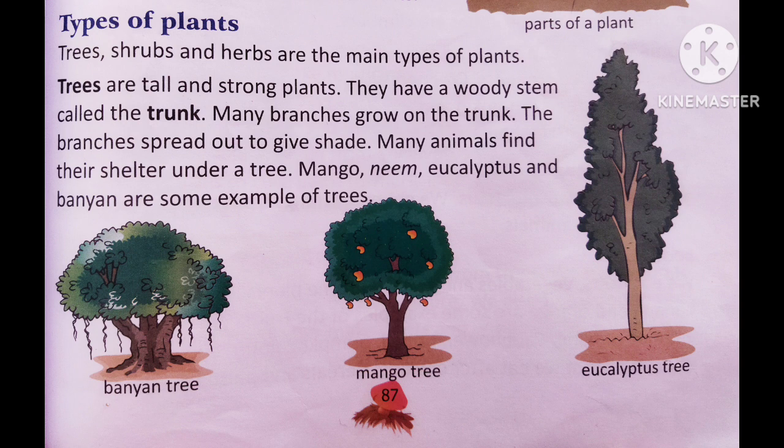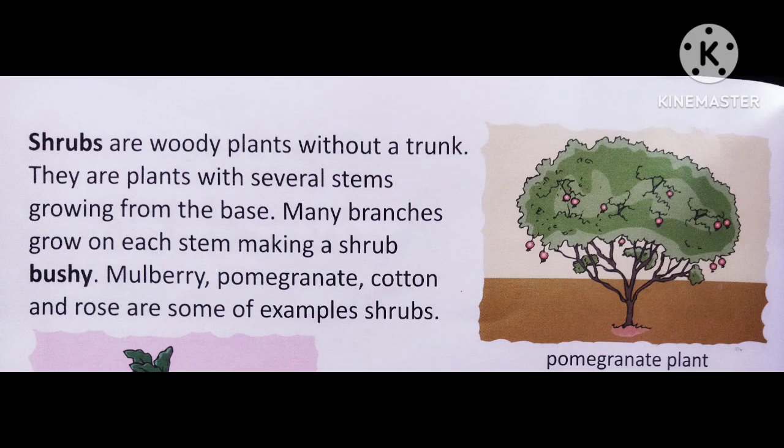Now let's move to shrubs. Shrubs are woody plants without a trunk. They are plants with several stems growing from the base. Many branches grow on each stem, making a shrub bushy. Mulberry, pomegranate, cotton, and rose are some examples of shrubs. Shrubs are also woody plants but they do not have a trunk.